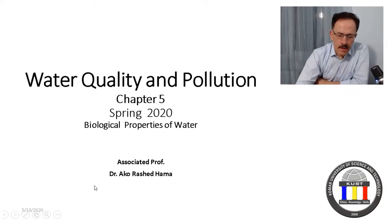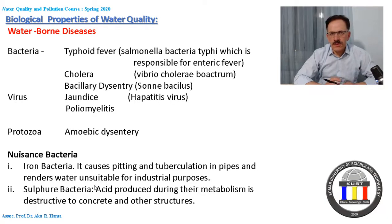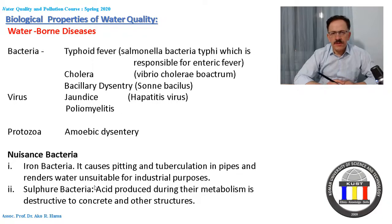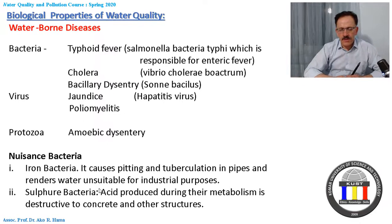The most important thing in studying the biological properties of water quality is to know how much water is safe in terms of biological properties. There are diseases called waterborne diseases that are transported via water, and this is due to the presence of bacteria, viruses, and protozoa. These microorganisms, when existing in water, will cause disease in people.